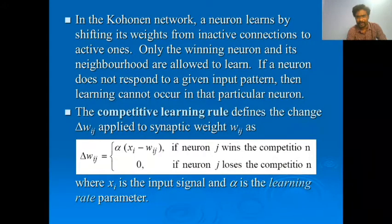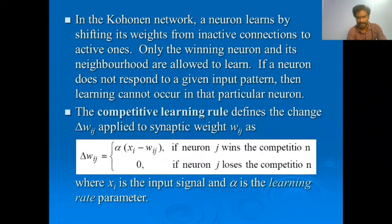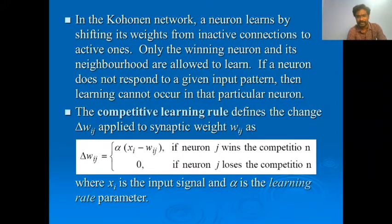In the Kohonen network, a neuron learns by shifting its weight from inactive connections to active ones. Only the winning neuron is allowed to learn or train. If a neuron does not respond to the given input pattern, we shift the input from inactive to active connection and check for a signal. The competitive learning rule defines the weight change: Δw_ij = α(x_i − w_ij) when neuron j wins the competition, and 0 if the neuron loses.